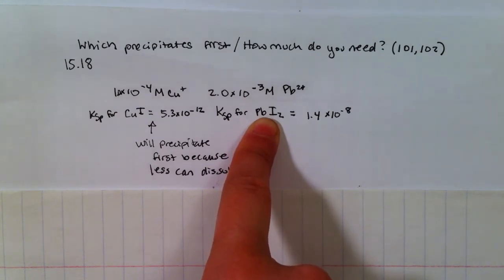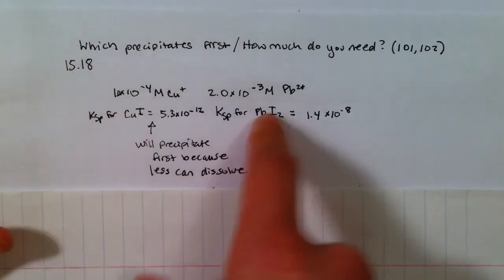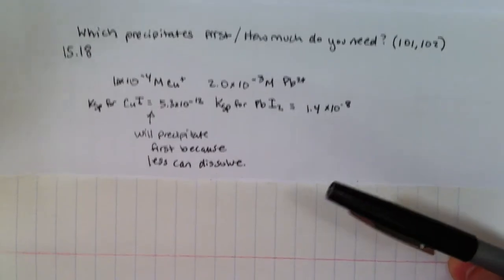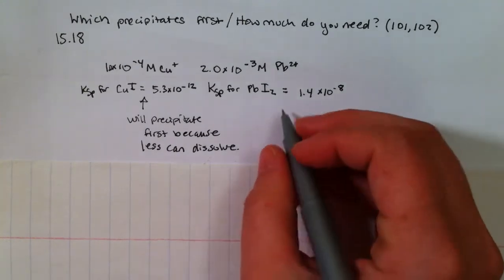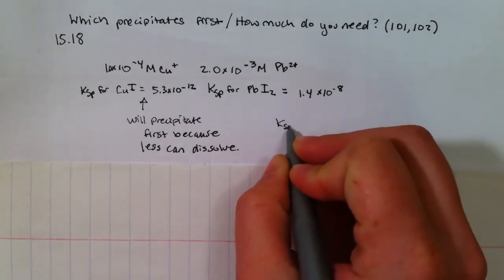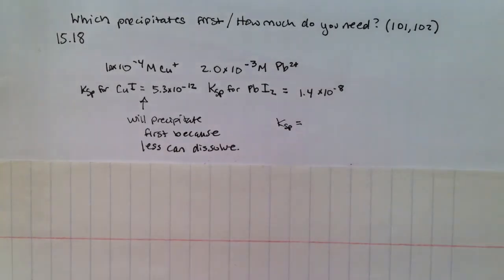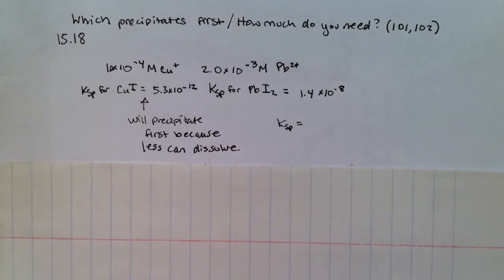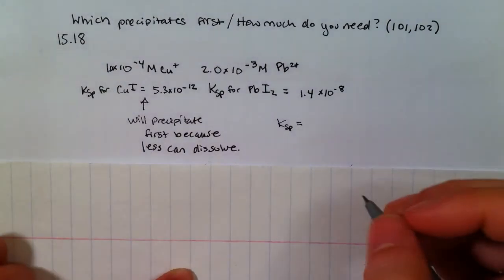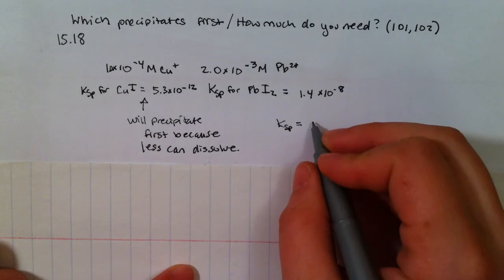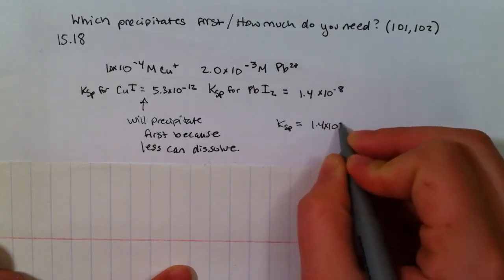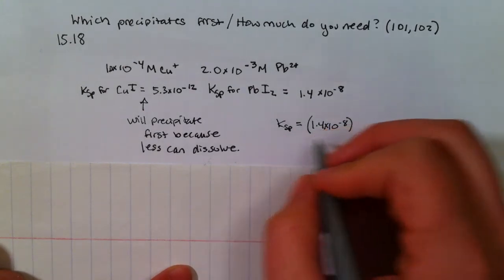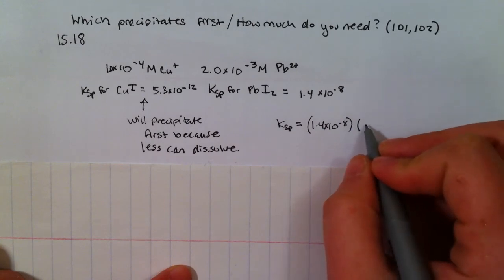Okay, so we're going to find the concentration that we need to cause a precipitate to form. We know Ksp, and that's equal to the lead times the iodine. So we have 1.4 times 10 to the negative 8th is the lead, and we want to know how much iodine.